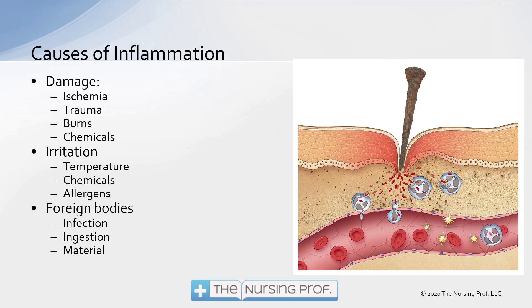Some different causes of inflammation. The picture on the right shows a foreign body — a puncture wound. You can see a rusty nail going through the skin and puncturing into the tissues. We don't want the rust, dirt, bacteria, et cetera on that nail to get into the bloodstream and cause the patient to develop sepsis.